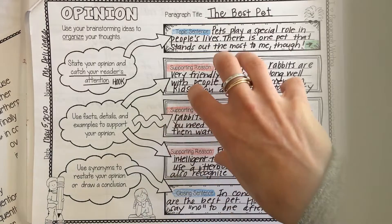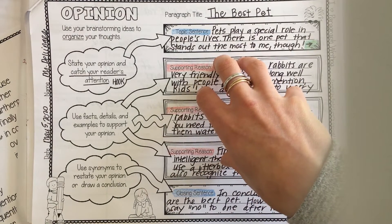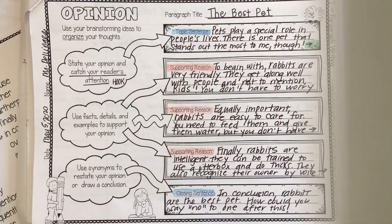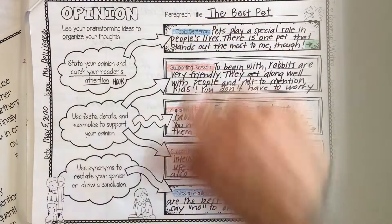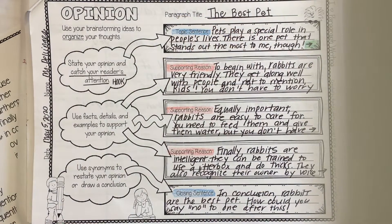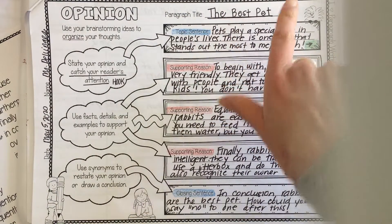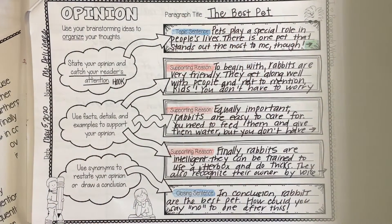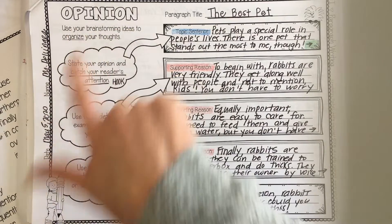I'm going to turn to the next page — page 6 — after my brainstorming page, and I'm going to write my first draft with the title 'The Best Pets.' As you can see, it says to use your brainstorming ideas to organize your thoughts.